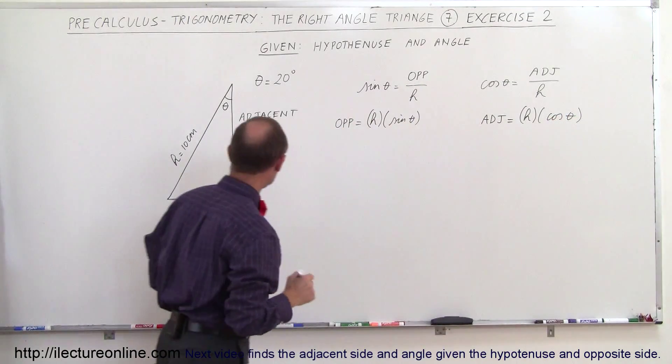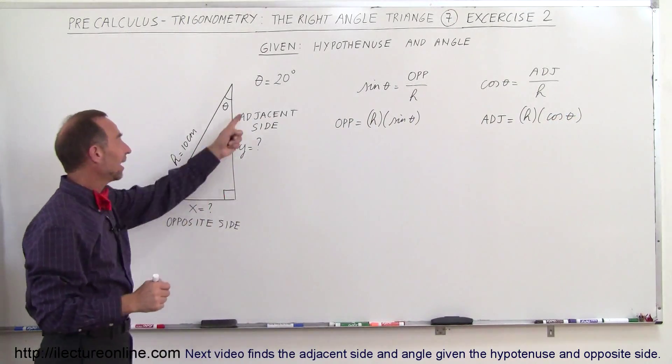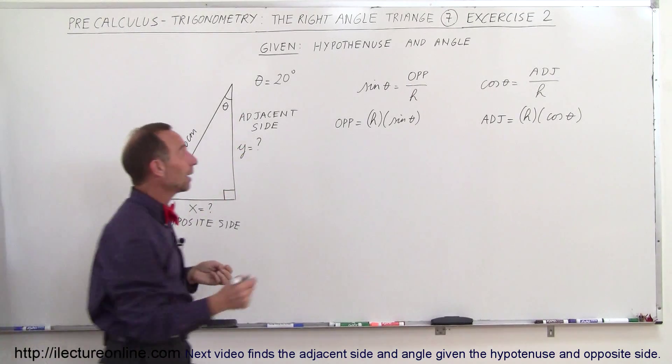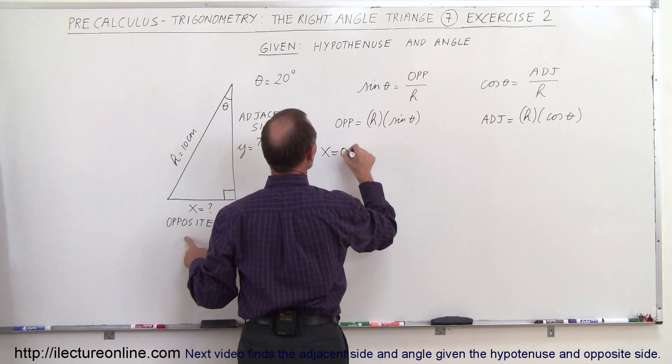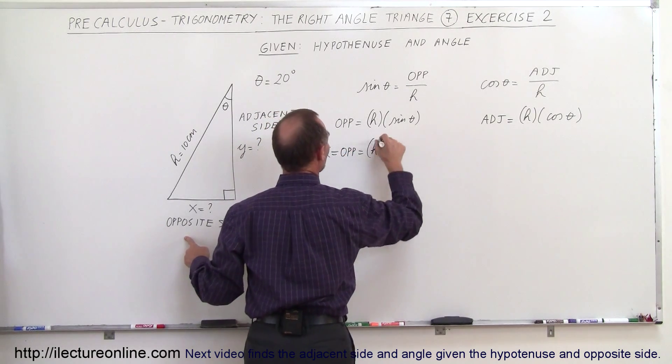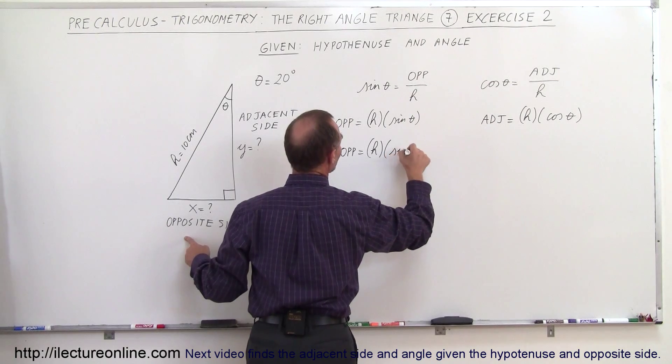And now be careful here, notice that the opposite side is x and the adjacent side is y so we can write that in this case the opposite side which is x is equal to the product of the hypotenuse H times the sine of theta.